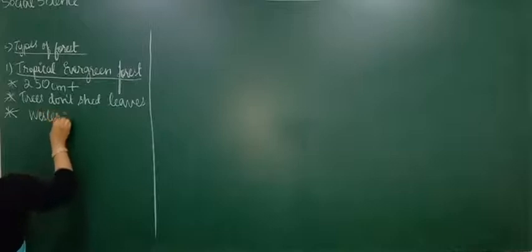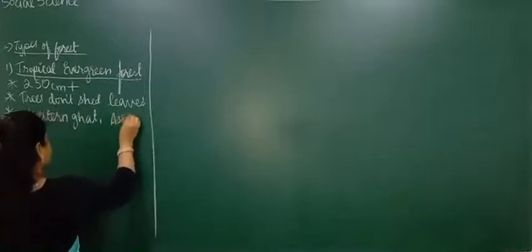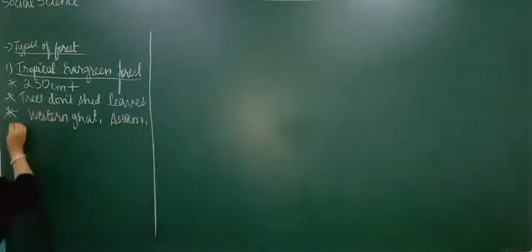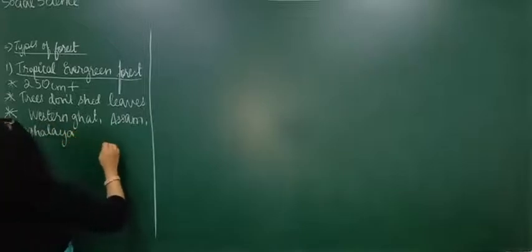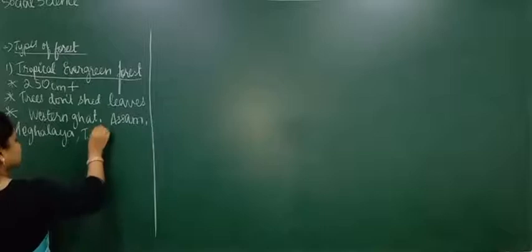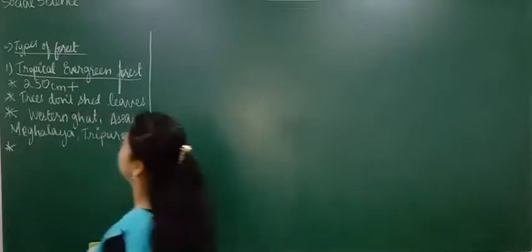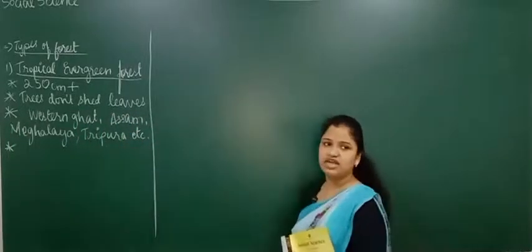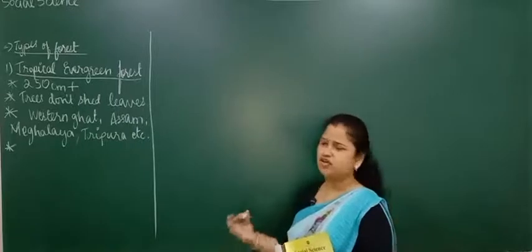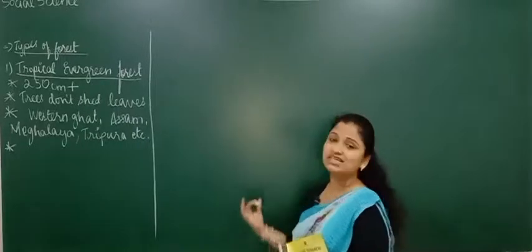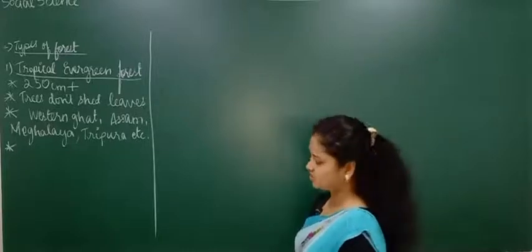The tropical evergreen forest is found in the Western Ghats, which receives high rainfall, Assam which receives the heaviest rainfall from the Bay of Bengal, Meghalaya, Andaman and Nicobar Islands, and Tripura. These forests receive more than 250 centimetres of rainfall every year. Let's also learn about some important trees present in the tropical evergreen forest.